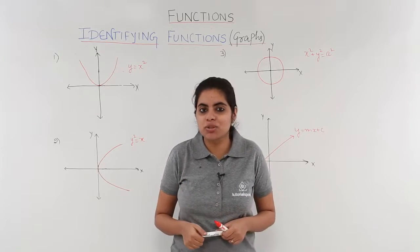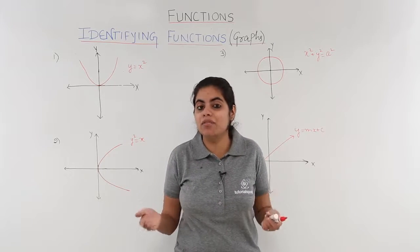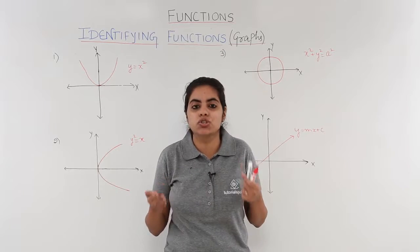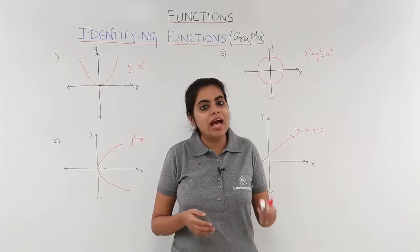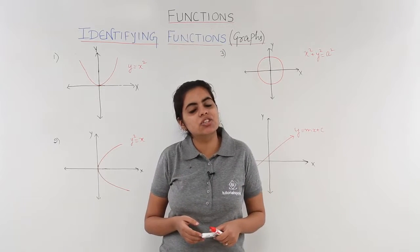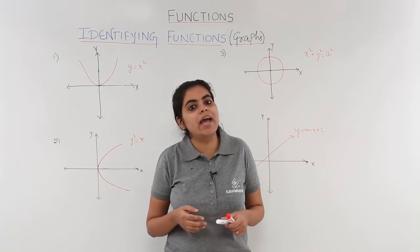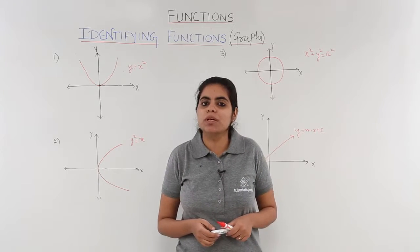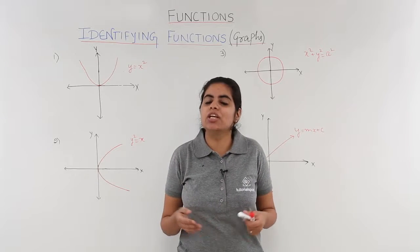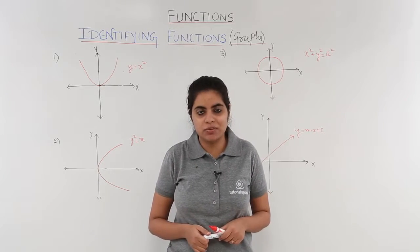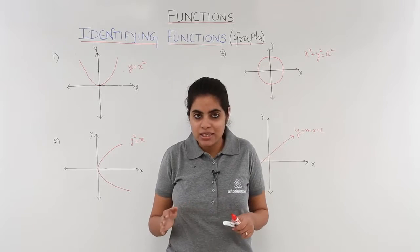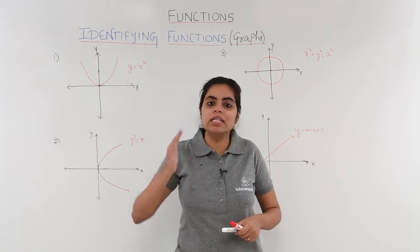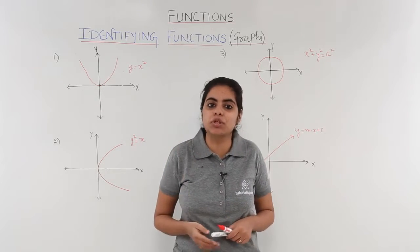The first condition is that every element of the first set should be associated. The second condition is that every element of the first set should be associated with a unique element of the second set. This was the theoretical concept of function which we have already seen in the previous videos.